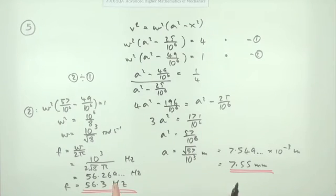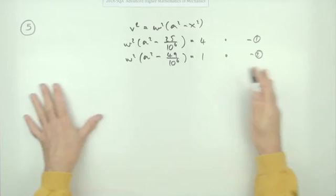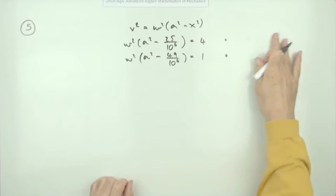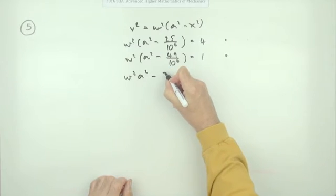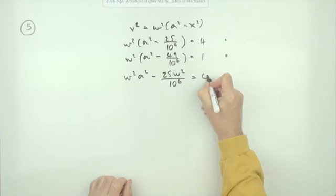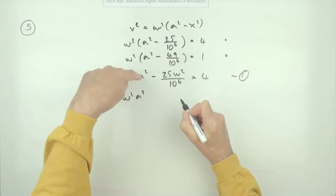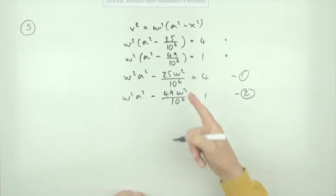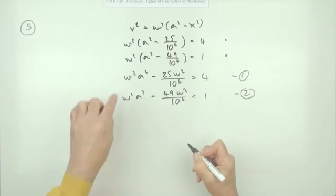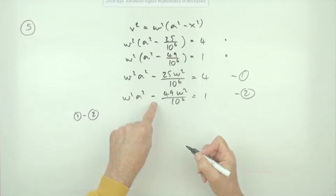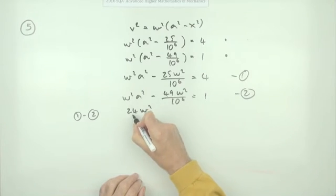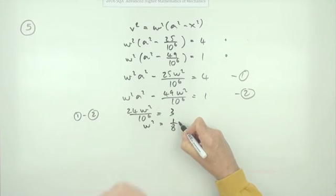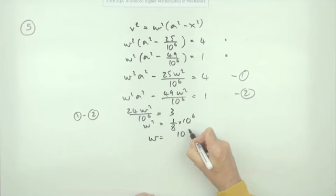The alternative method is to expand the equations and use subtraction. Equation 1 becomes ω²a² − 25ω²/10⁶ = 4 and equation 2 becomes ω²a² − 49ω²/10⁶ = 1. Subtracting equation 2 from equation 1: the ω²a² terms cancel, leaving 24ω²/10⁶ = 3, so ω² = 3/24 × 10⁶ = 10⁶/8 — the same result as before.